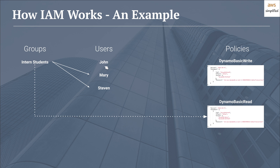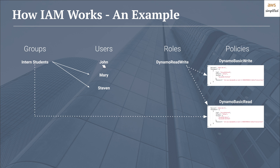Now what about John? John wants to access the table as well — he wants the put item, query, and get item APIs. We can create a DynamoDB read/write role and associate both policies with it. Anyone using this role will have access to those resources and API endpoints. In the user section for John, we grant him this DynamoDB role, giving him access to the table for the put item and query and get item APIs. That's a simple example of how you may set this up in an organization.